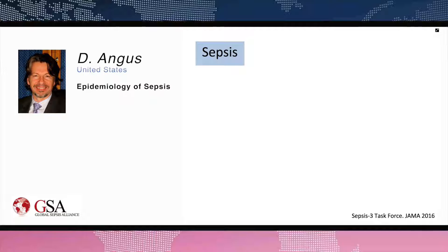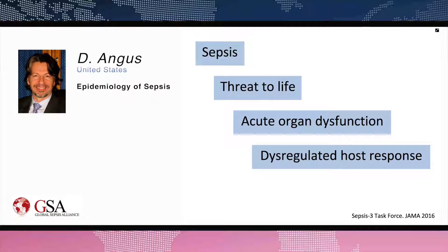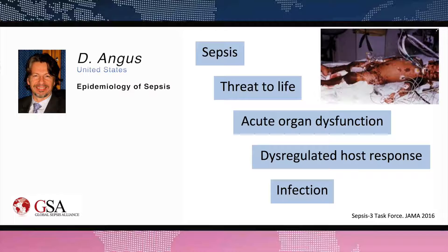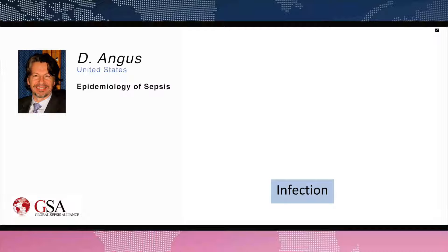If we think about our current conceptual definition of sepsis as articulated in the recent task force paper in JAMA, sepsis is a threat to life that develops because of acute organ dysfunction, which was due to a dysregulated host response to infection. That definition feels understandable with a classic case — a child presenting with meningococcal septicemia in the ICU on a ventilator — but when we try to convert it for epidemiologists counting cases, we begin to run into trouble.